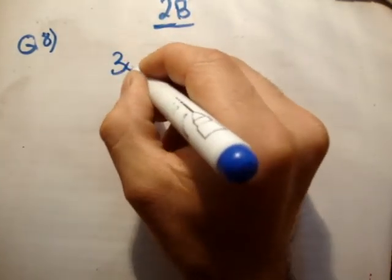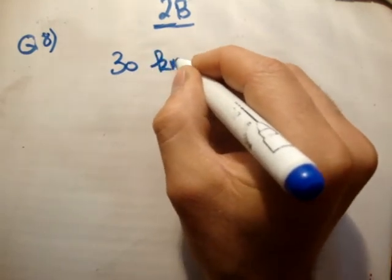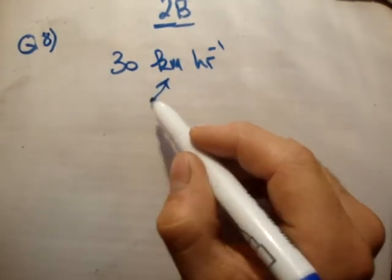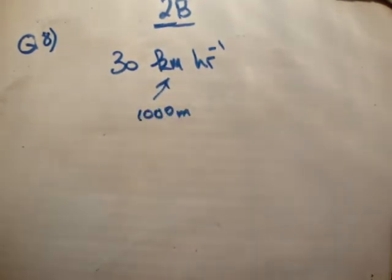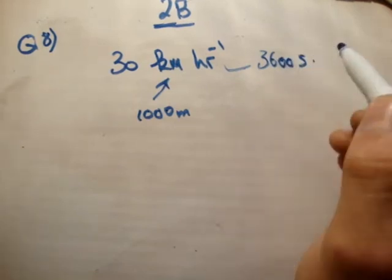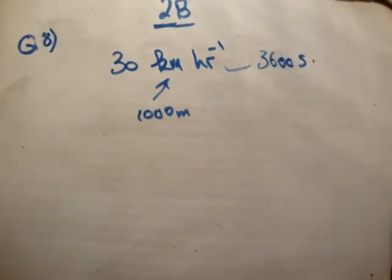A particle starts from rest with a uniform acceleration of 2 m/s². After how many seconds will it be 30 km/hr? First, we need to convert 30 km/hr into meters per second. We know that a kilometer is 1,000 meters, and an hour has 3,600 seconds because it's got 60 seconds per minute and 60 minutes in the hour. 60 times 60 is 3,600.